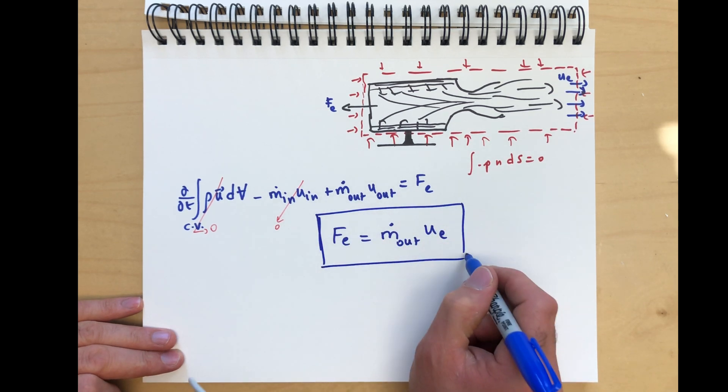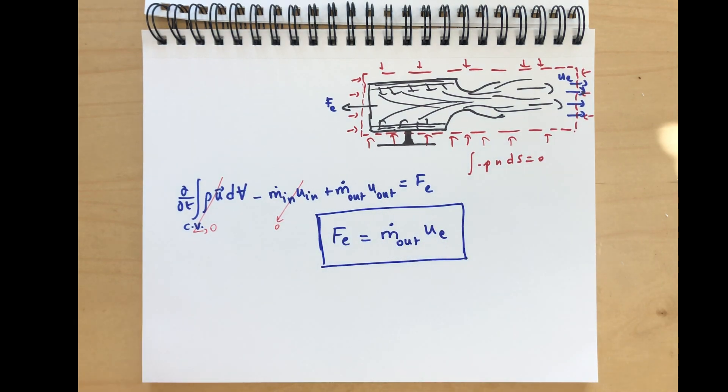And that's a very basic formula for thrust. You have a jet, you have a hose that's putting out water. That's how you calculate the force that you have to exert on the jet or on the hose to maintain it.